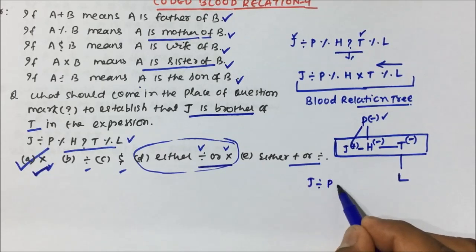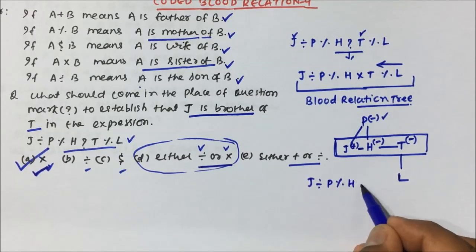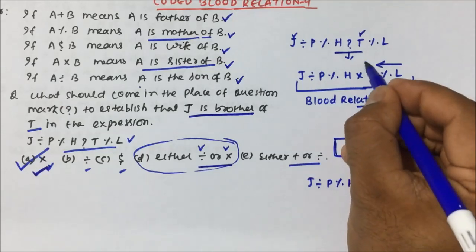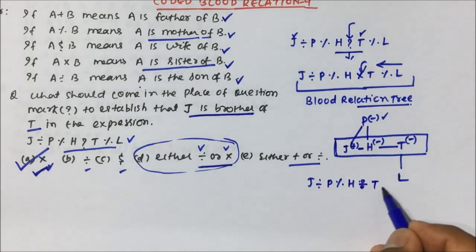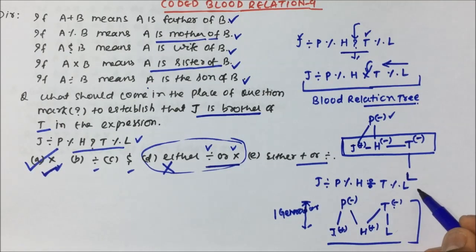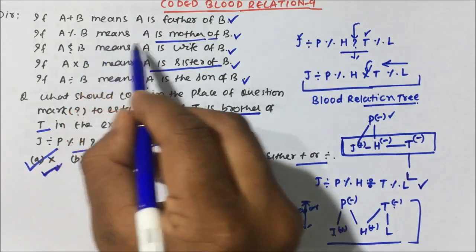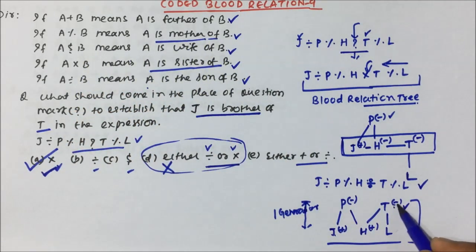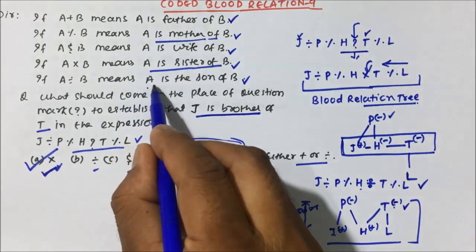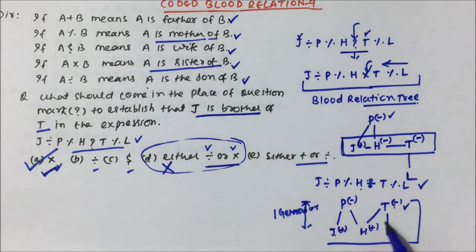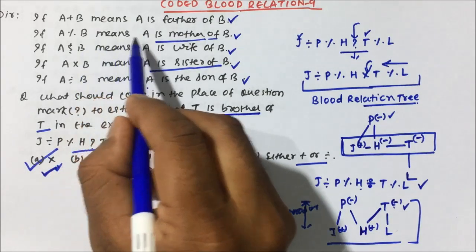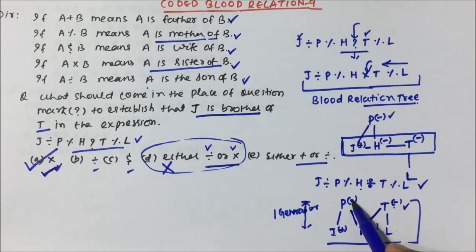If we place division at the question mark: J division P, percentage H, division T, percentage L. Drawing the blood relation tree: T percentage L means T is mother of L. H division T means H is son of T — so there is one generation gap. Then P percentage H means P is mother of H.